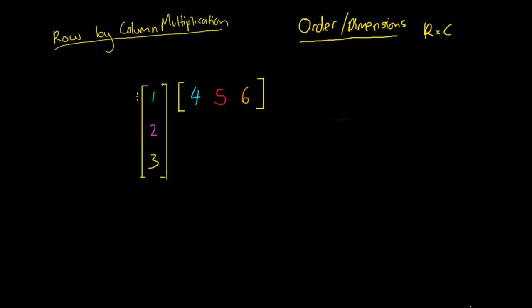If we're looking at this matrix here on the left, we know it's got one, two, three rows, so we'd have three rows, and it's got just the one column going down here — so this is a three by one matrix. Then we've got this other matrix which has just the one row going from left to right, and one, two, three columns — so it's a one by three matrix.